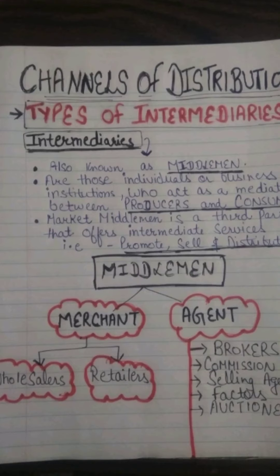Agent middlemen are further classified into five major categories: brokers, commission agents, selling agents, factors, and auctioneers. In further videos, we will cover wholesalers, retailers, brokers, commission agents, selling agents, factors, and auctioneers in detail.